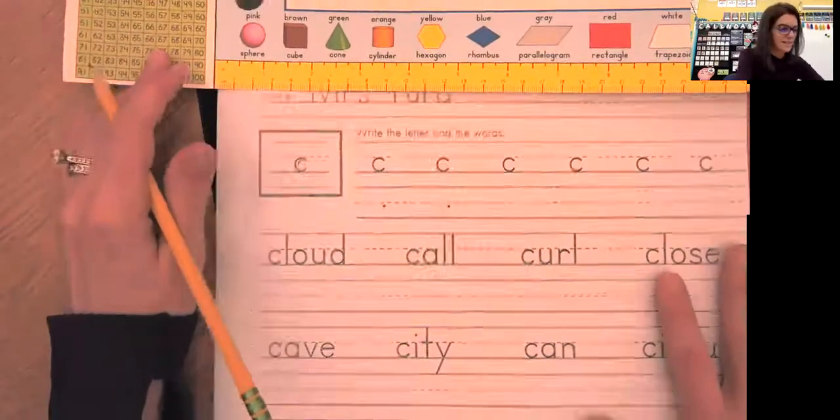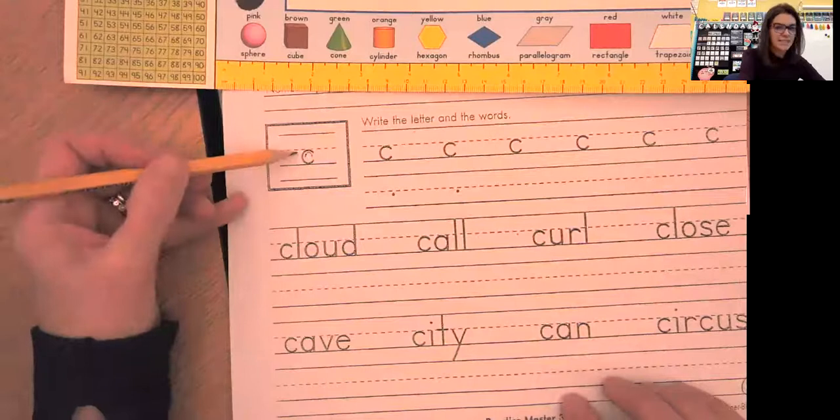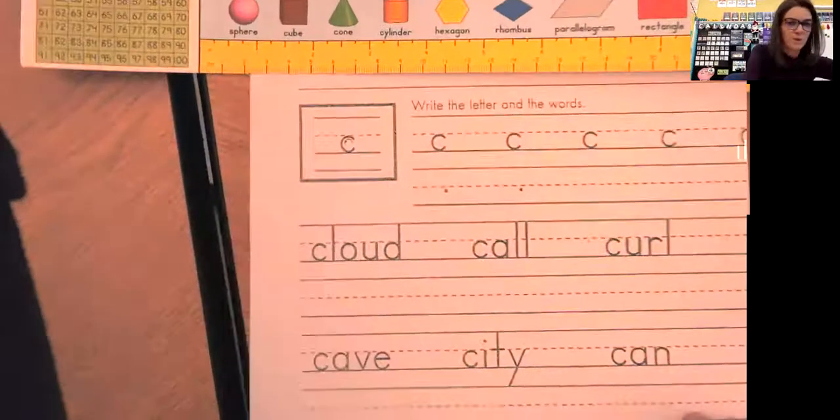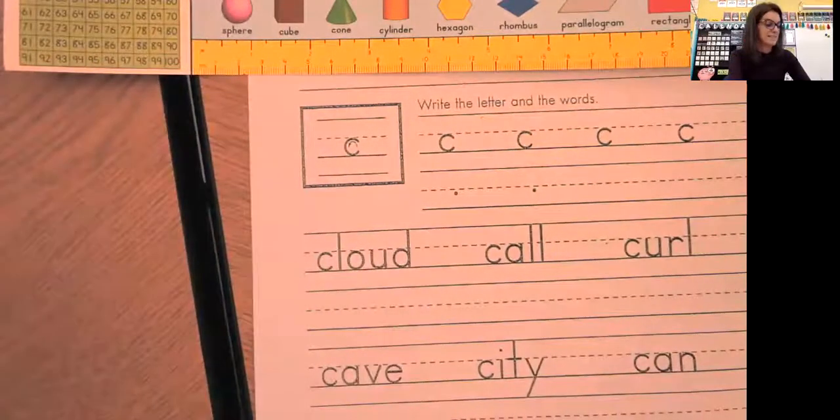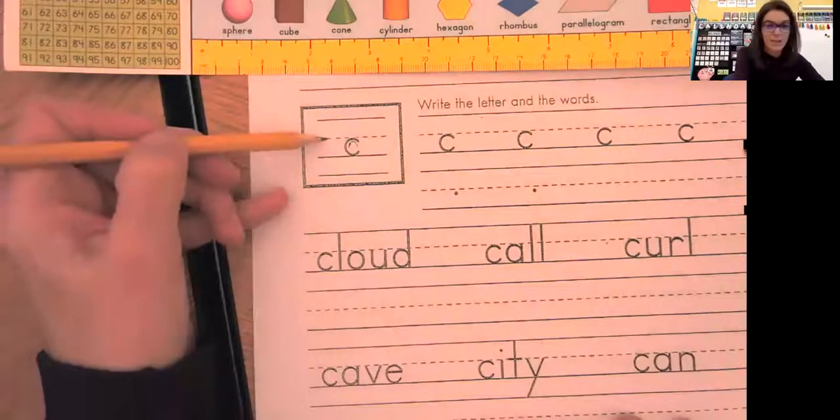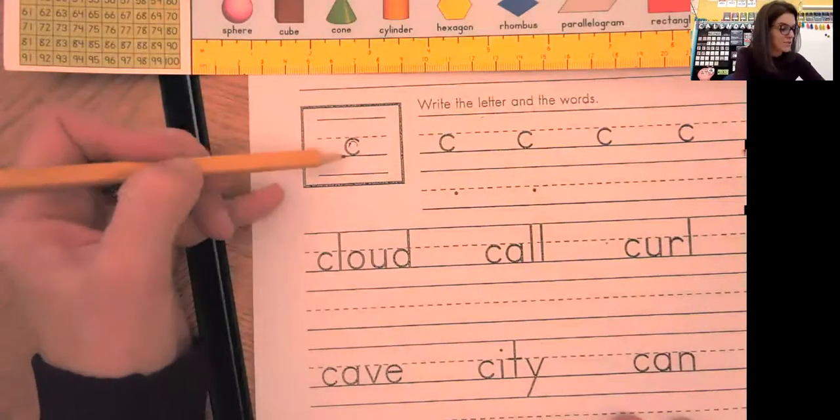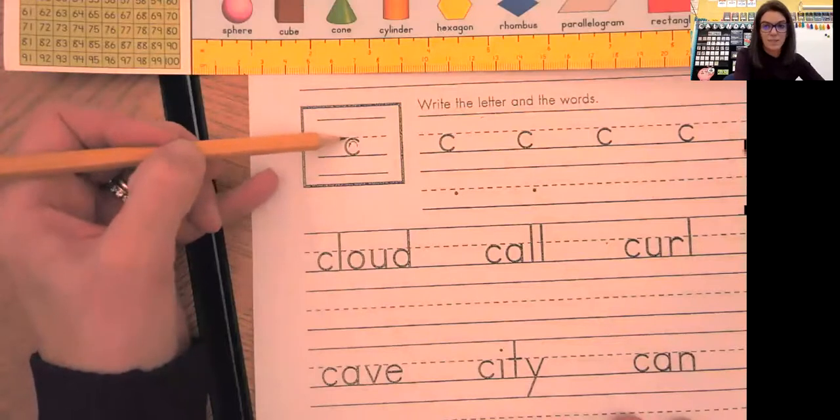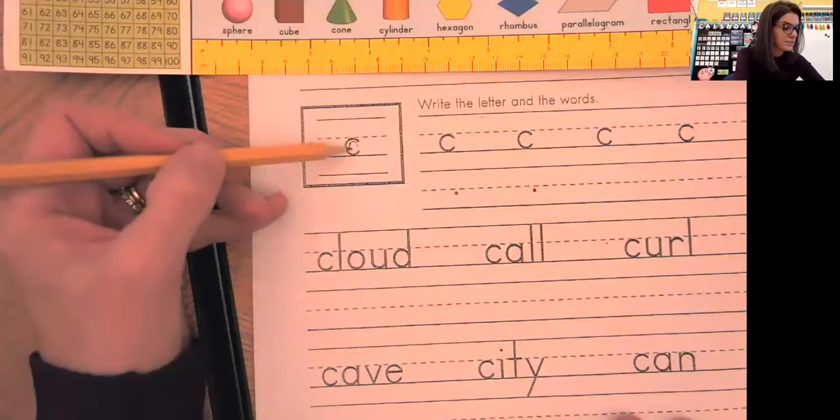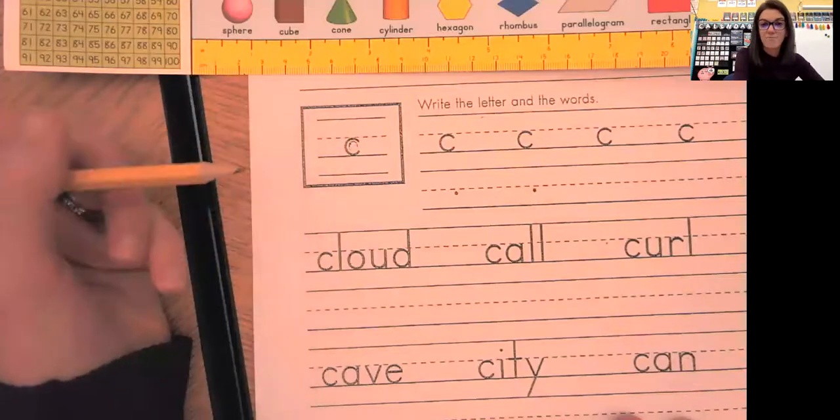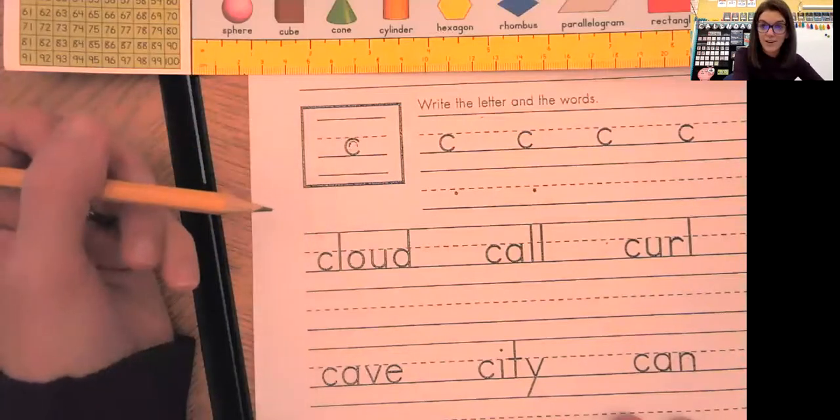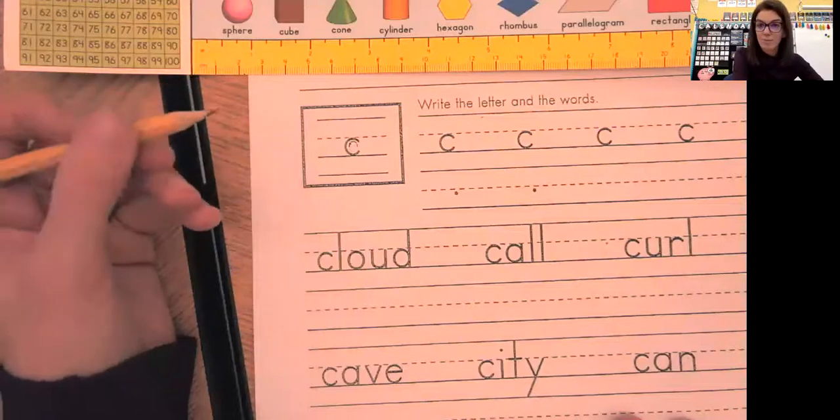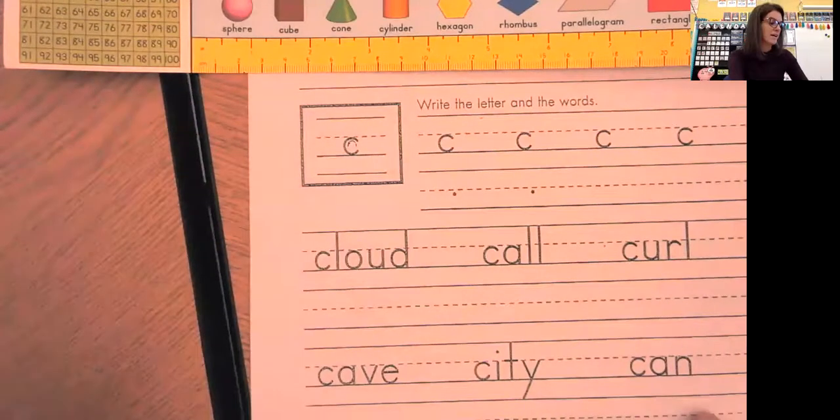All right. Moving on to lowercase C. Let's take a look here in our black box. Lowercase C does not go past the plain line. It fits right in between the grass line and the plain line. It does not go over the plain line. I also noticed there's just a number one here. That means we write the whole letter without picking up our pencil.